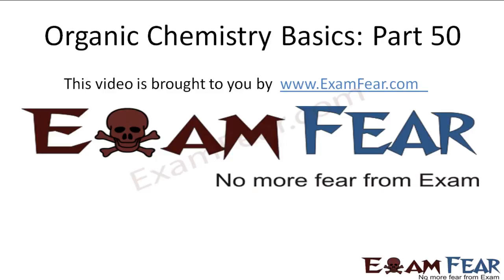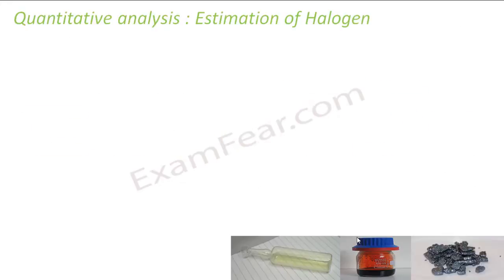Hello friends, this video on Organic Chemistry basics part 50 is brought to you by examfier.com. No more fear from exam. Now let's see estimation of halogens. So we have chlorine, bromine, and iodine.